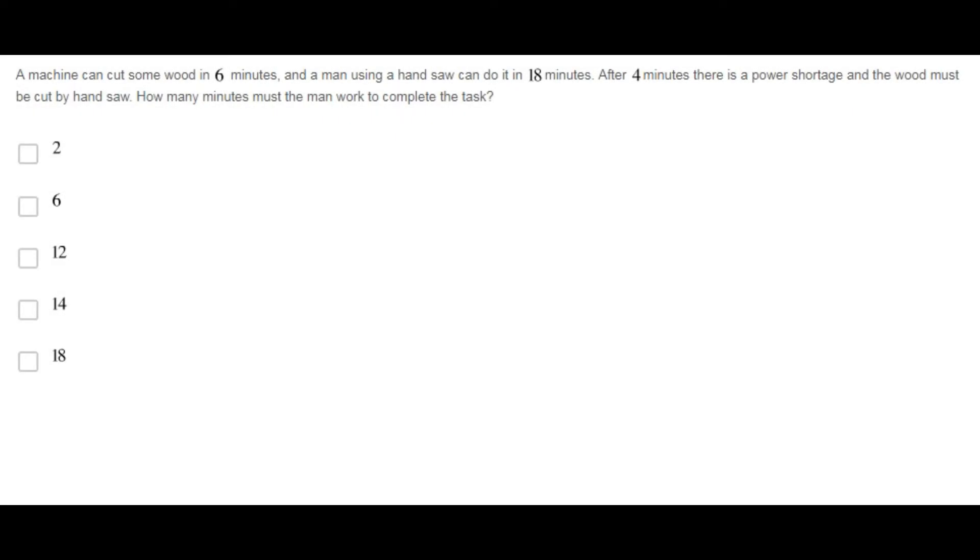A machine can cut some wood in 6 minutes and a man using a hand saw can do it in 18 minutes. After 4 minutes there is a power shortage and the wood must be cut by hand saw. How many minutes must the man work to complete the task?